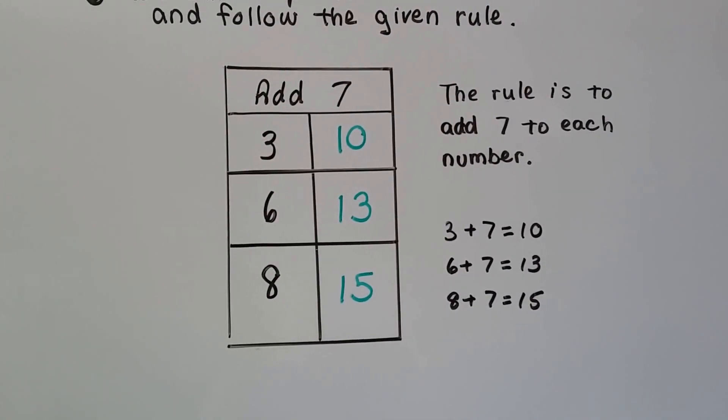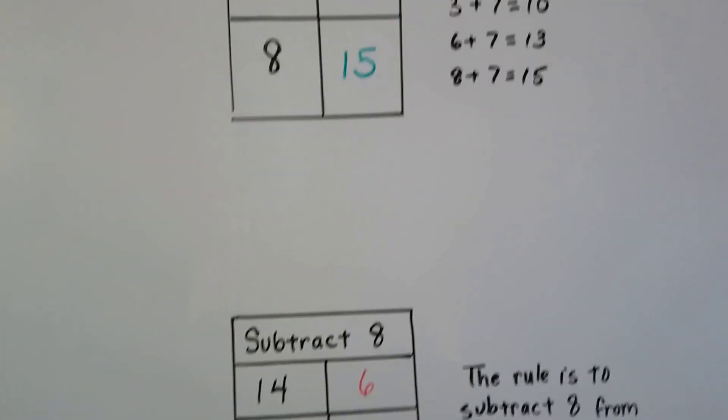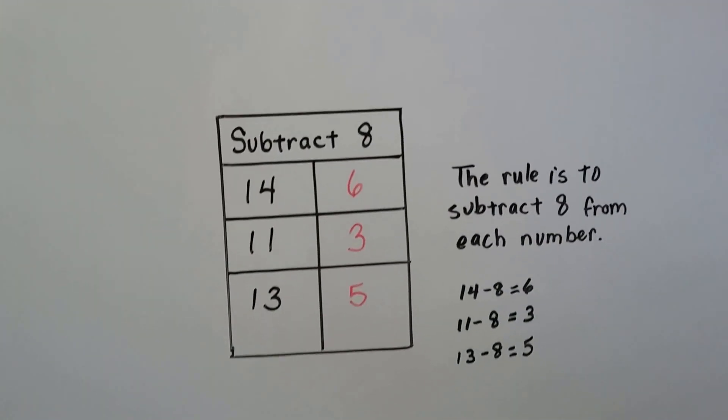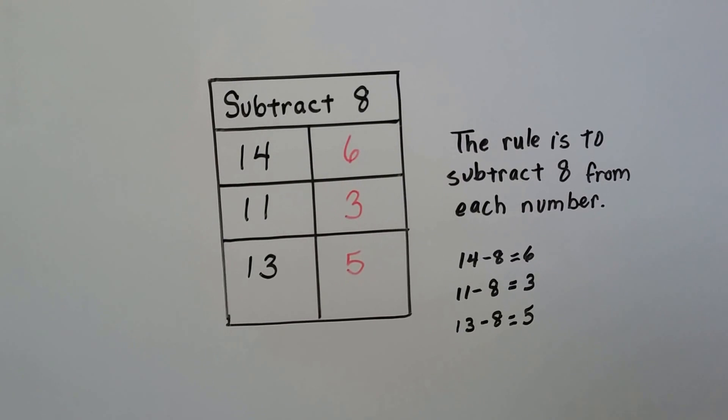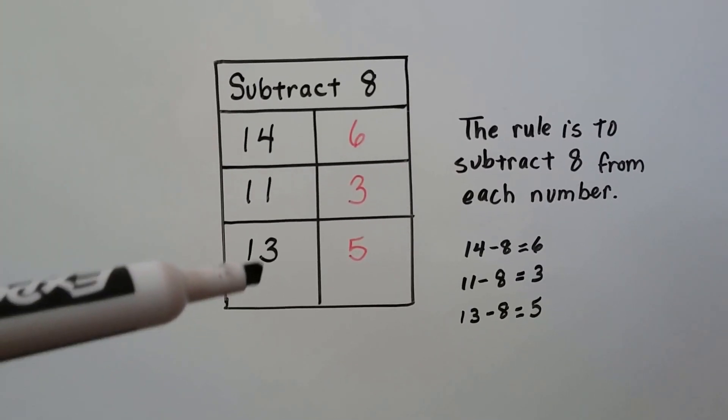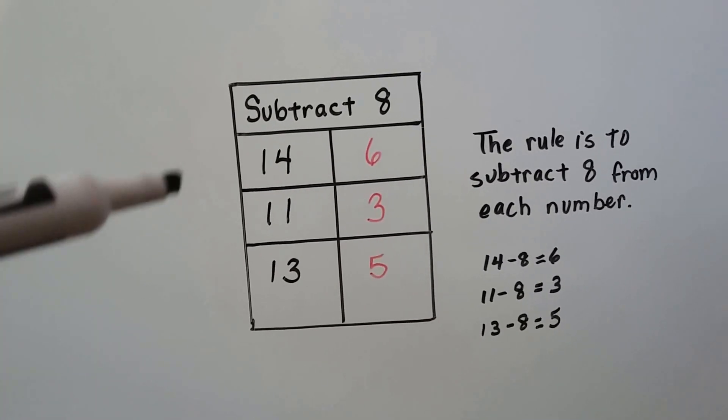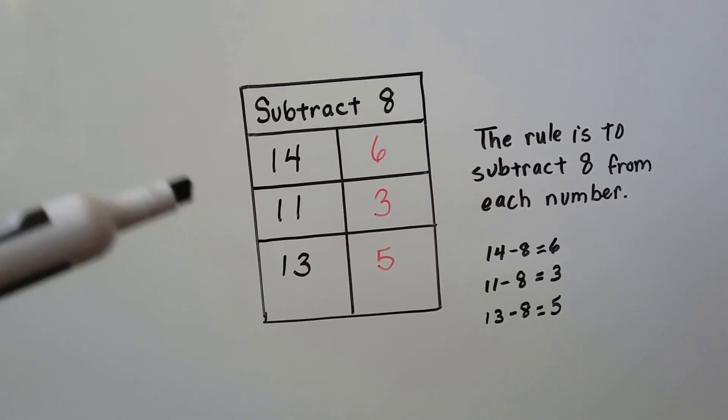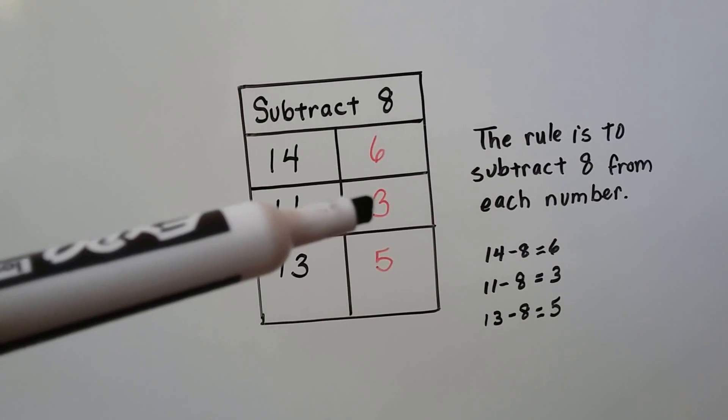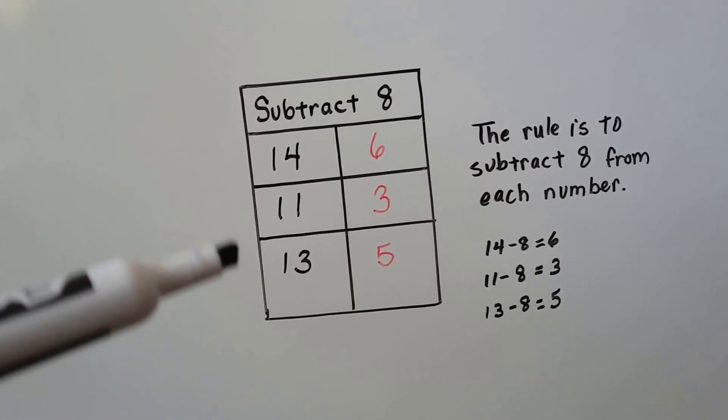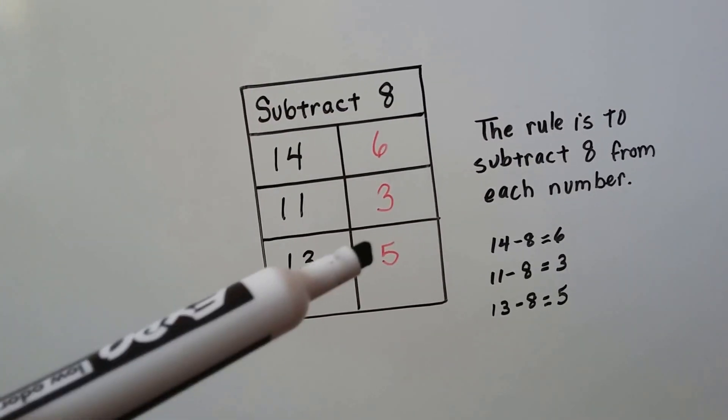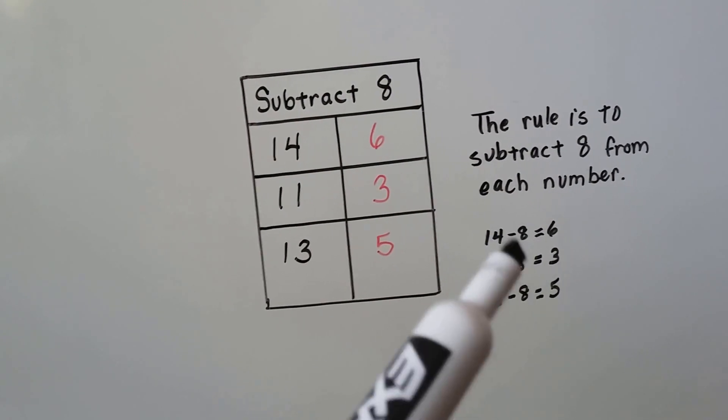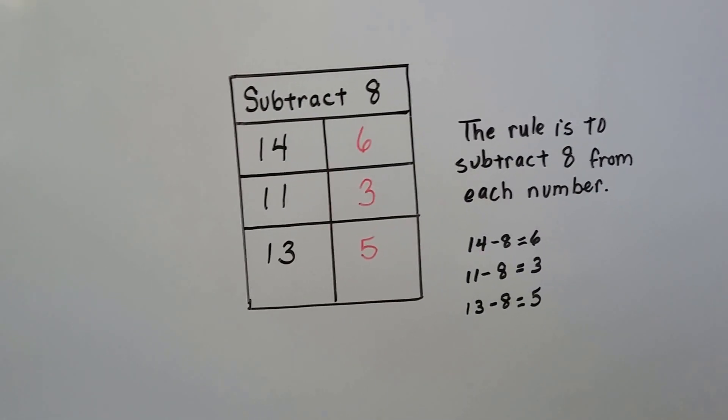Now it says our rule is to subtract 8 from each number. We're going to do 14 minus 8, that equals 6. 11 minus 8, that equals 3. 13 minus 8, that equals 5. We subtracted 8 from each one of those numbers because that was the rule.